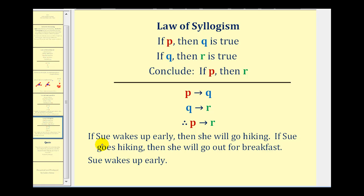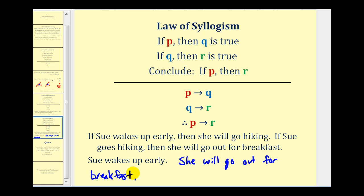Here's an example: if Sue wakes up early then she will go hiking; if Sue goes hiking then she will go out for breakfast. So if we're given that she wakes up early, we know she'll go hiking, and since she goes hiking she'll go out to breakfast. We can conclude that if she wakes up early, she will go out for breakfast. This is a valid form of deductive reasoning using the law of syllogism.